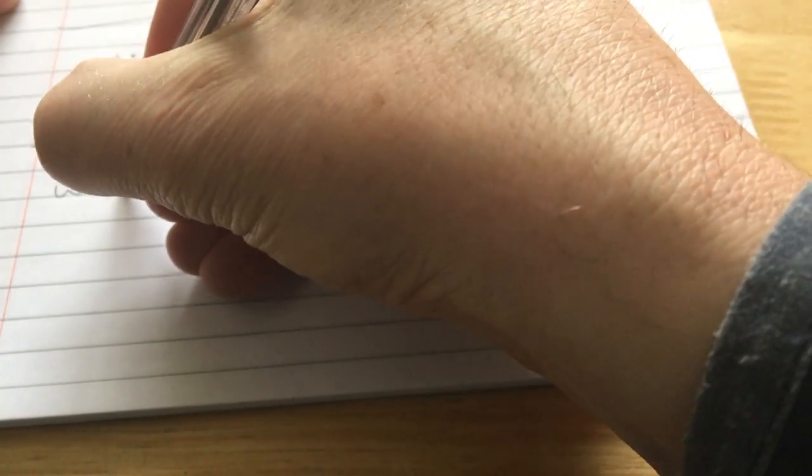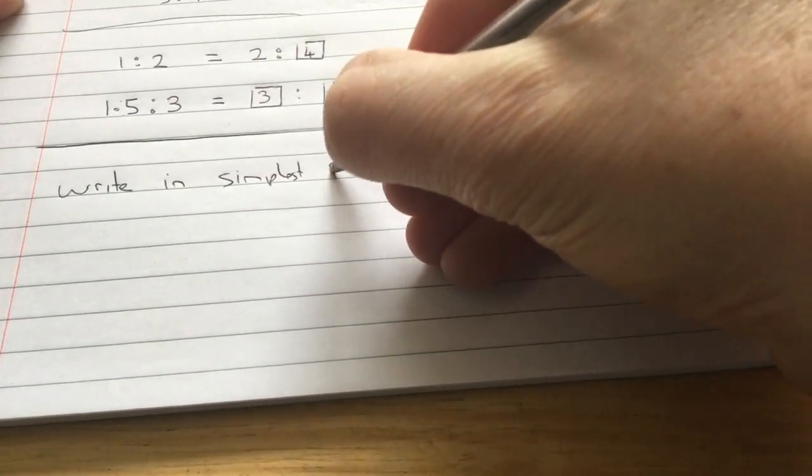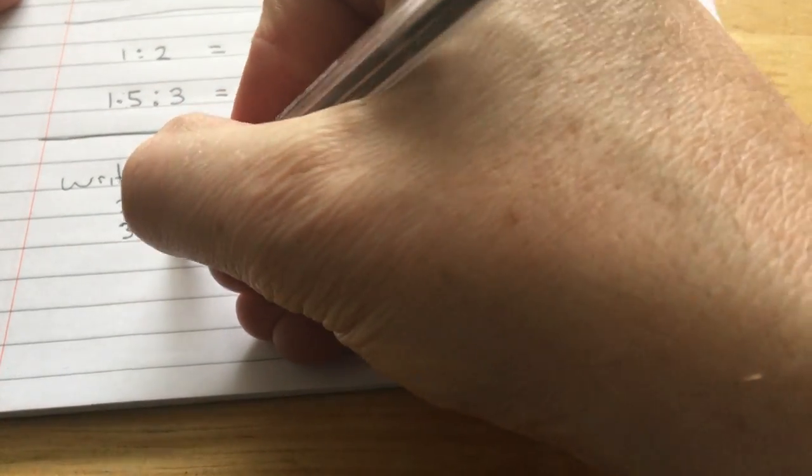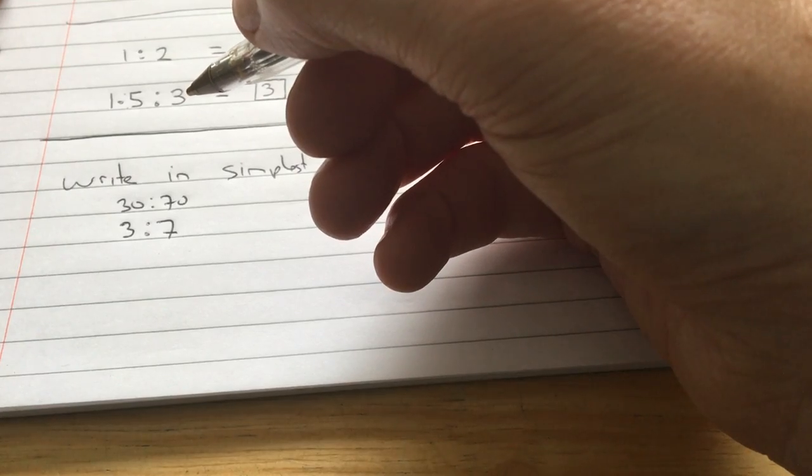Now, if I ask you to write in the simplest form, so screef, so firm, simply. So write in the simplest form. Say we had that 30 is to 70. So find something that divides into 30 and 70. Well, that's a nice easy one. 10 divides into 30 three times, and 10 divides into 70 seven times.